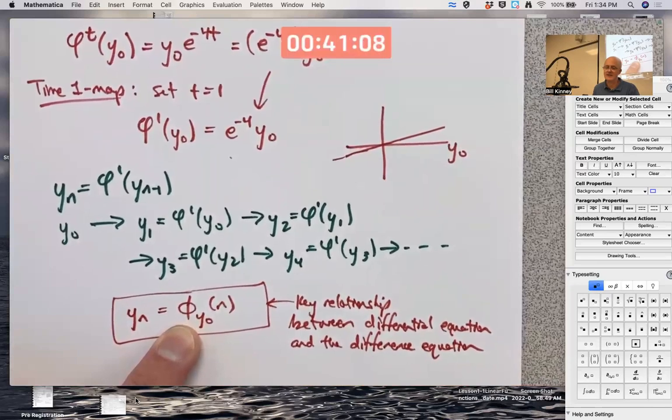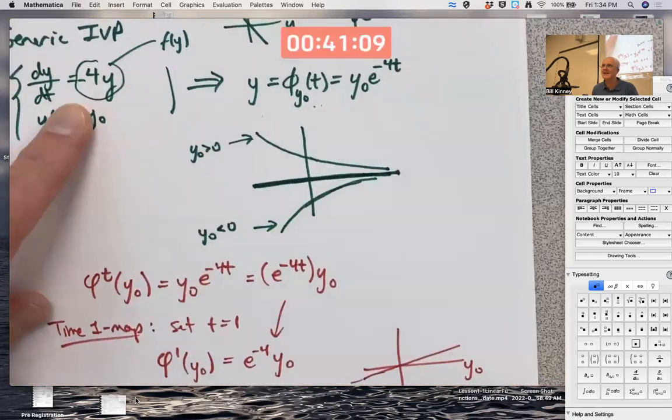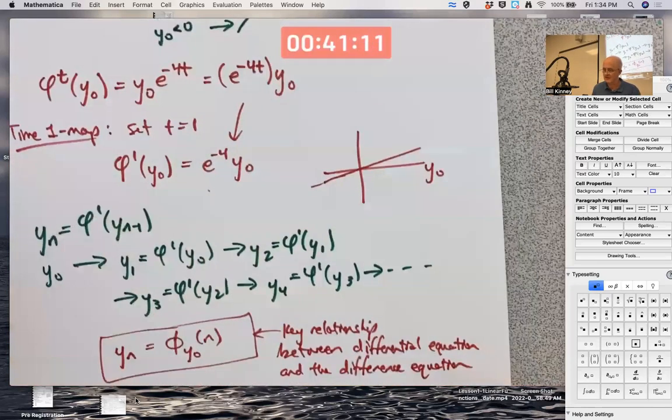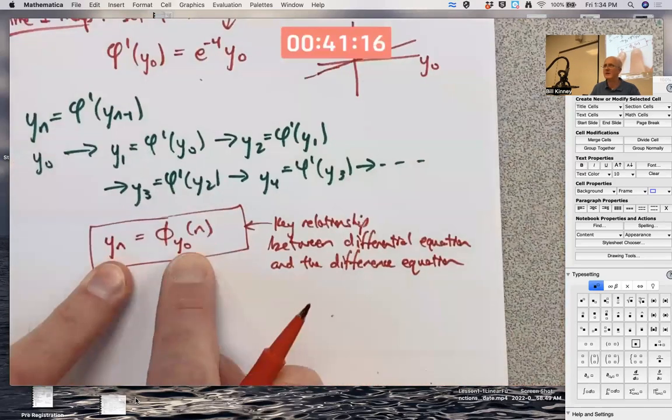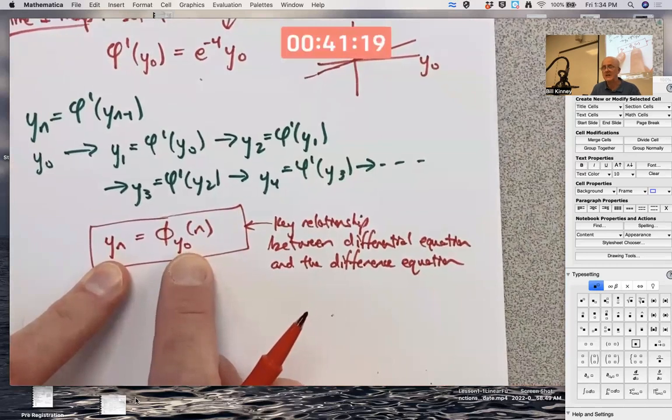If it's non-autonomous, if there are t's on the right-hand side, then this doesn't work. This thing down here. You can still do this kind of stuff, but this relationship doesn't work anymore. And that's not as good.